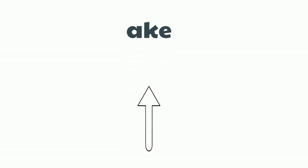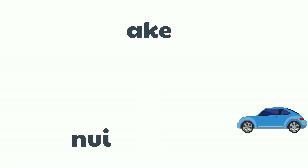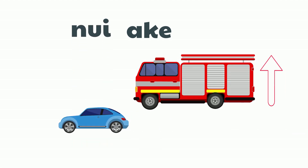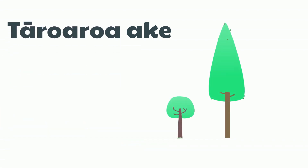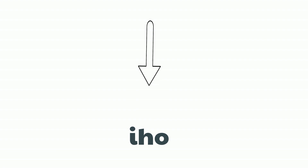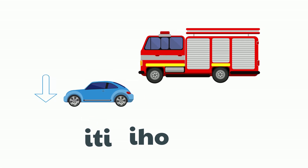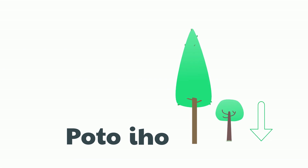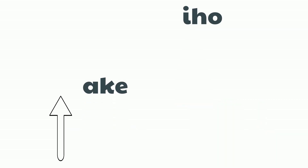We use ake to indicate more. For example, nui ake means bigger, and taro roa ake means taller. We use iho to indicate less. For example, iti iho means smaller, and poto iho means shorter. You'll find that in general, ake is used more so than iho.